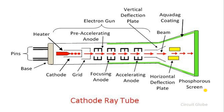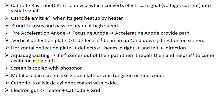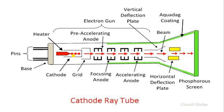So like this, we strike the electron on the phosphorous screen using vertical and horizontal deflection plates. Just now I mentioned the aquaduct coating — if electrons come out of their path, it repulses the electrons and helps them come back to the focusing path. The outer layer is called aquaduct coating. If the electron comes outside of the anode or grid, the aquaduct coating repulses the electron and sends it again to the focusing path.